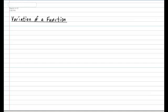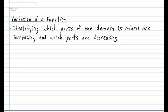Now what does it mean when we want to analyze how a graph is changing? Well it means the following. It means that we want to identify which parts of the domain, and remember the domain refers to the x values, are increasing and which parts of the domain are decreasing.